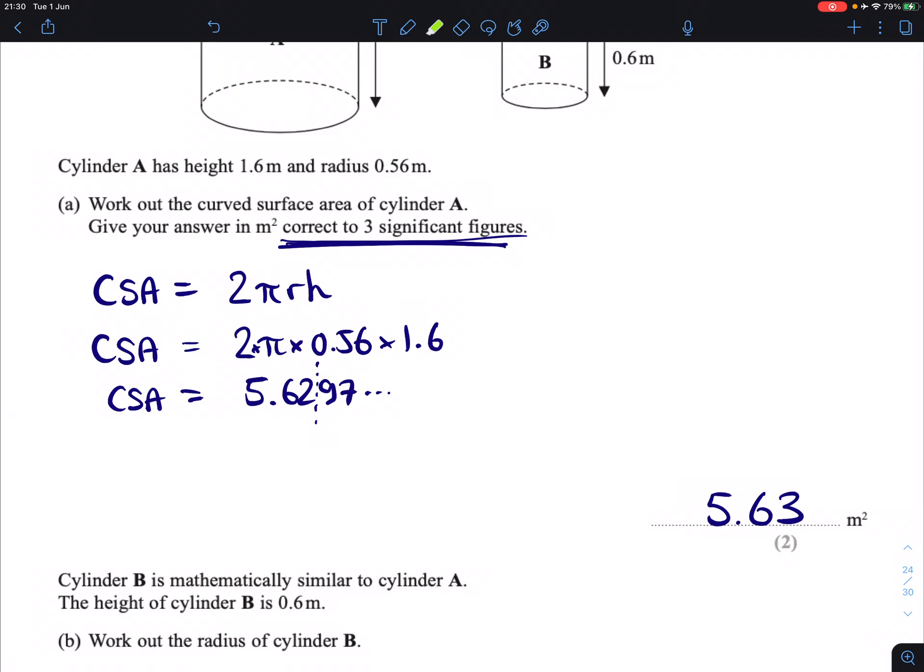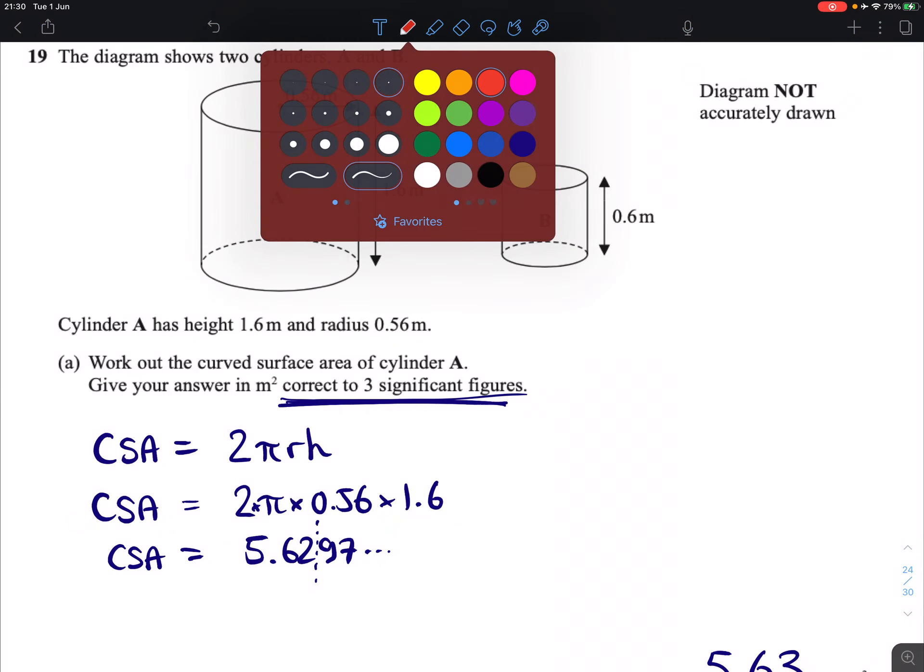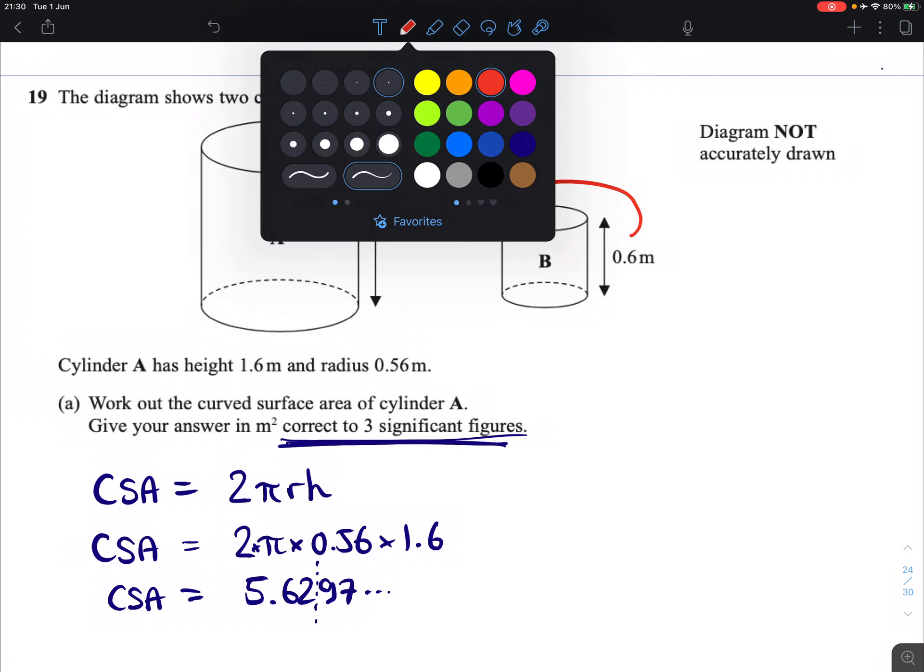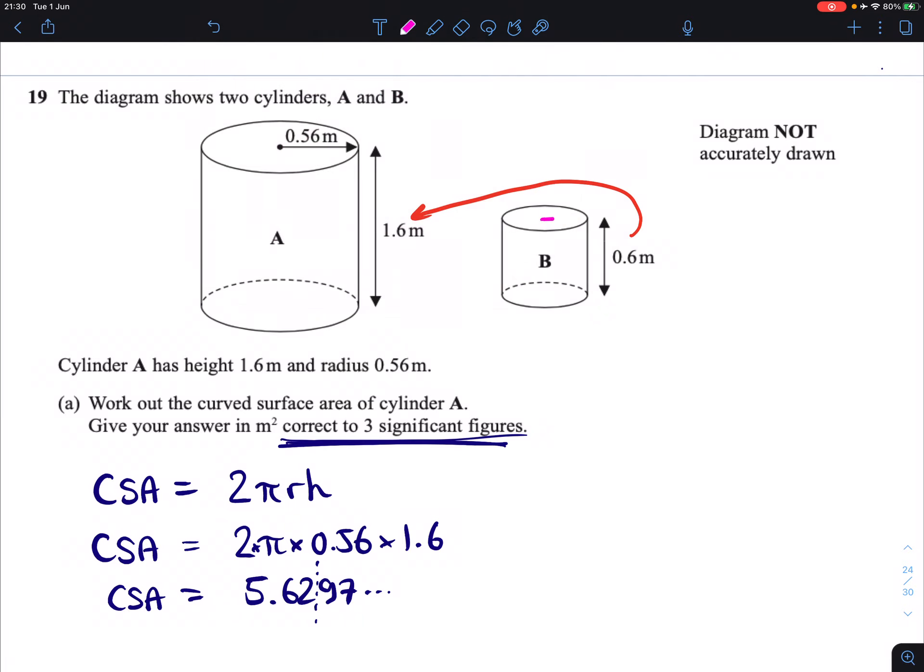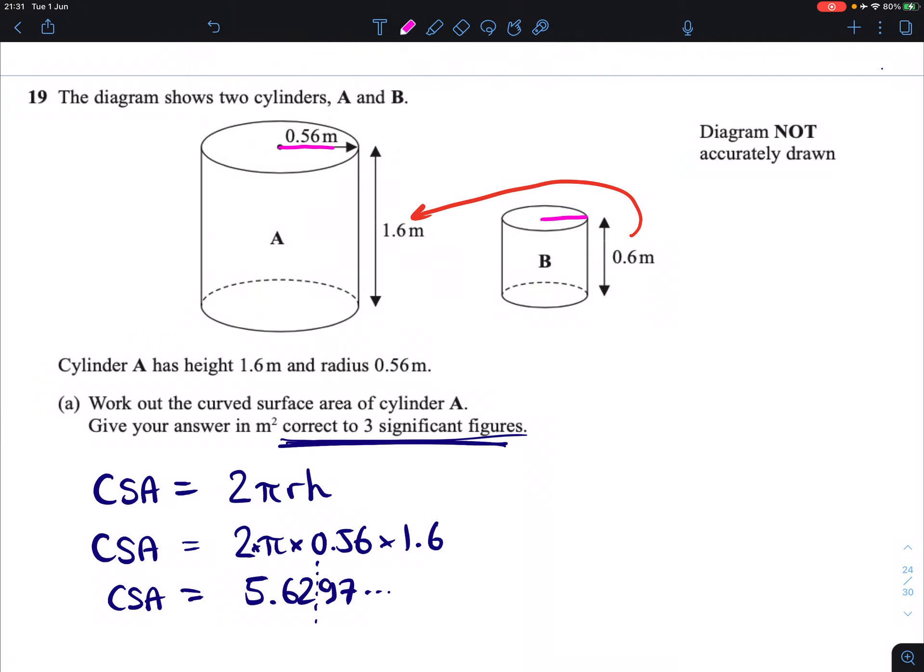Cylinder B is mathematically similar to cylinder A. So, what that means is if you compare any corresponding lengths, lengths that describe the same thing in each shape, for example, 0.6 and 1.6, or for example, a small radius here and the big radius there, you will have a scale factor. The big lengths are going to be so many times as big as the small lengths, and it's going to be the same scale factor for both of them.